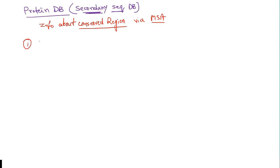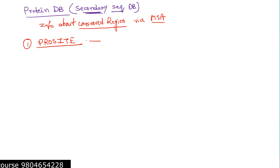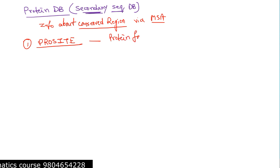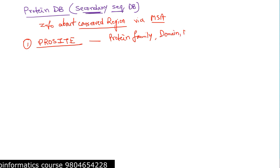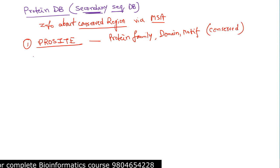PROSITE is an example of a secondary sequence database, again maintained by the Swiss Institute of Bioinformatics. It was created for protein family characterization. PROSITE carries information regarding protein family, protein domain, motif, and conserved motif sequences — sequences which are conserved.